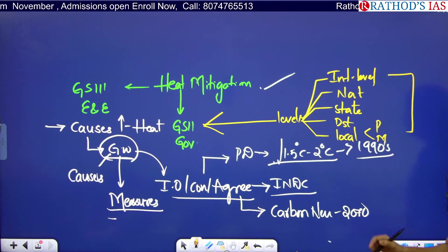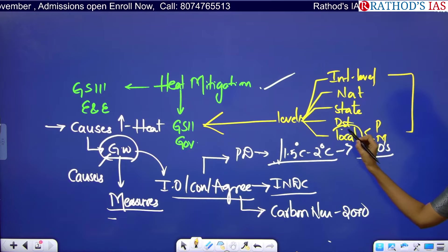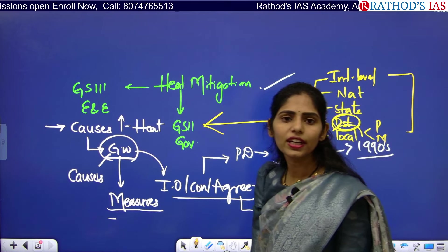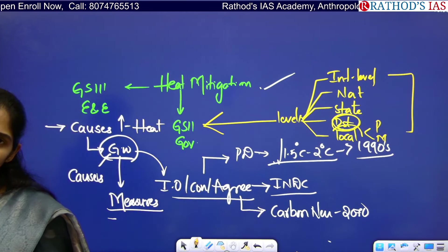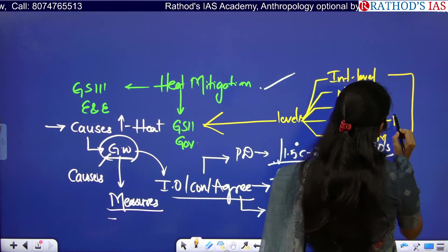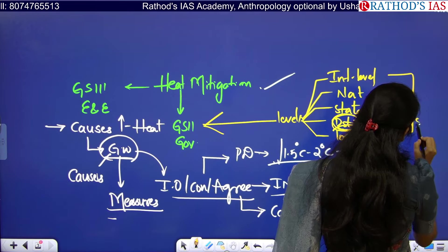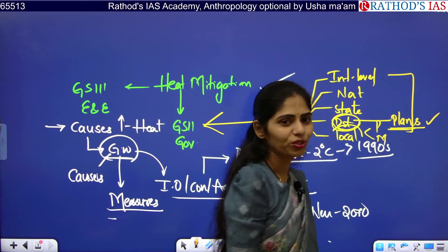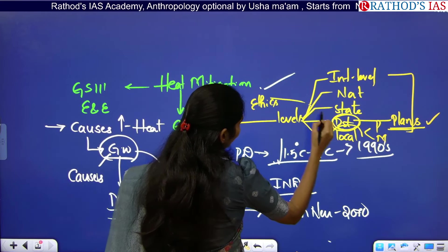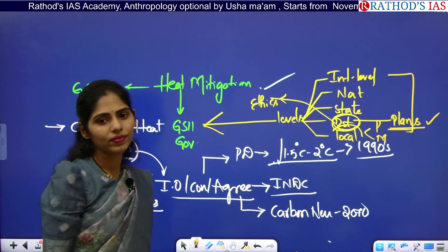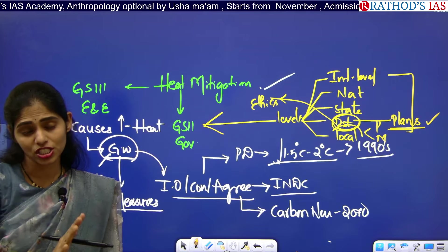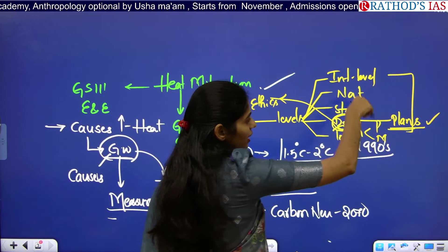You will be coming under the district level as district magistrate or district collector. What plans are you going to take to control the measures at district level? If you want to write a main answer for GS1, GS2, or GS3, you need to address all these levels.